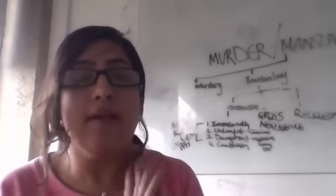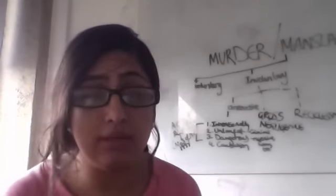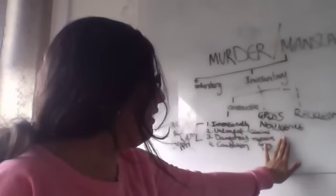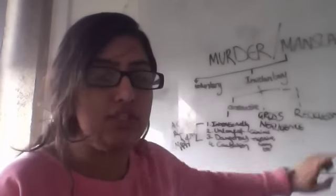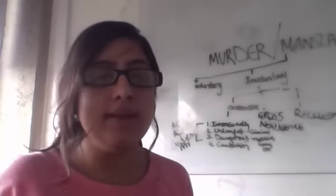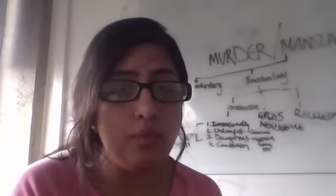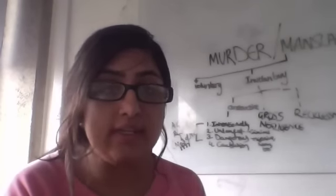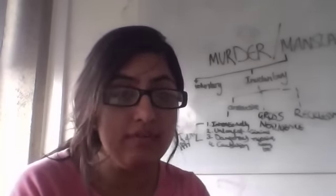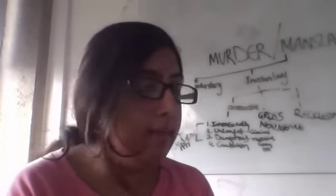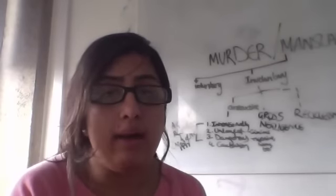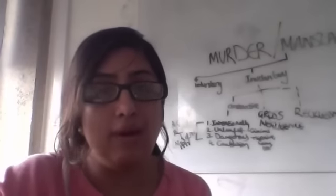We're dealing with involuntary manslaughter. There are three types: constructive manslaughter, which is what we're looking at today; then gross negligence manslaughter; then subjective recklessness. We'll discuss the extent to which that third type exists. Constructive manslaughter is essentially where the courts construct a conviction of manslaughter out of a less serious criminal offence — for example, assault or theft. So if I punch you and as a result you die, you could be liable for involuntary manslaughter even though you lack malice aforethought.